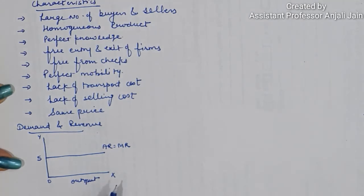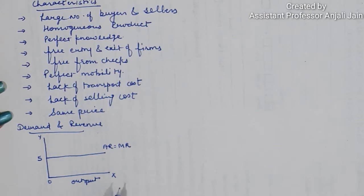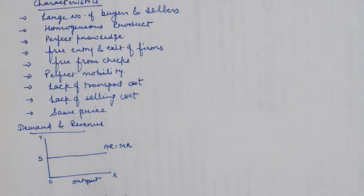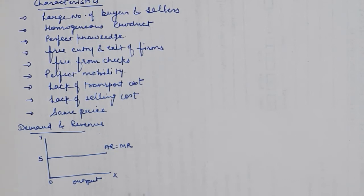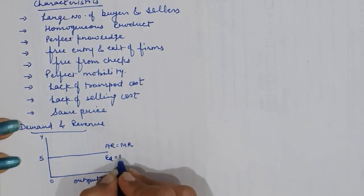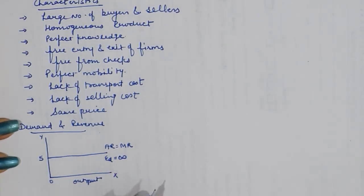The price is determined by the industry's market forces and every firm has to accept that price. There are many reasons for this: the number of firms is very large, so no single firm can influence market forces. Since they deal in homogeneous products, the question of differential pricing does not arise. If a firm tries to fix a lower price, that would be irrational, as their supply would become limited. The second conclusion is that demand is perfectly elastic — elasticity of demand is infinite — meaning the firm's entire output is demanded at the existing price.